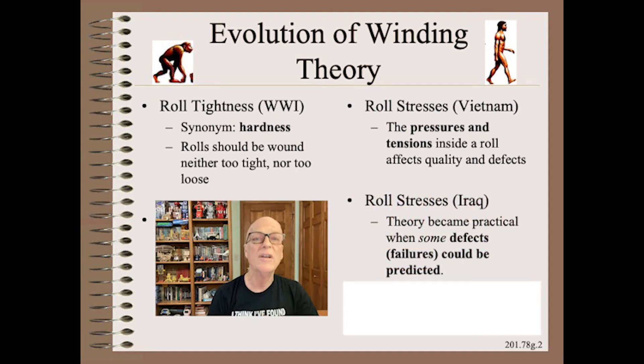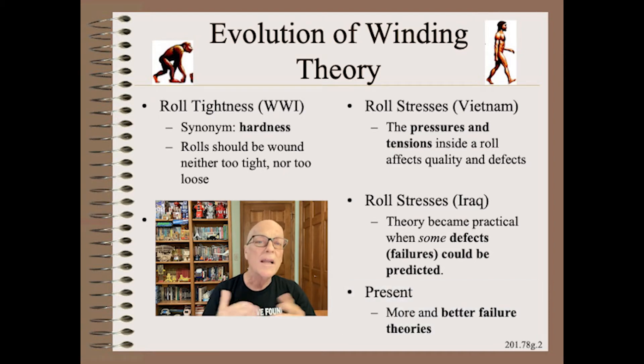The fourth stage of evolution was in the 1990s where the first quantitative failure theories emerged. Prior to this, we could predict stresses, but so what if the inner layer pressure was 10 bar? Is 10 bar too high? Too low? Just right? Or doesn't it even make a difference for the problem that we are working on at this moment? Now we know, at least for some defects. Now theory becomes practical. What we have done since is add more and better failure theories to our winding models.